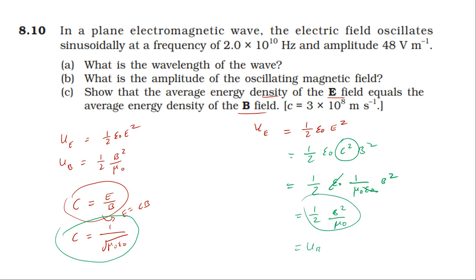The left-hand side is the electrical energy density, and the right-hand side is the magnetic energy density. Therefore, the average energy density of the electric field is equal to the average energy density of the magnetic field. That is the answer.